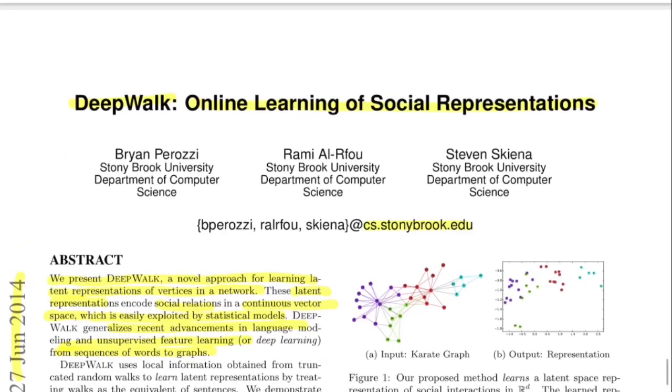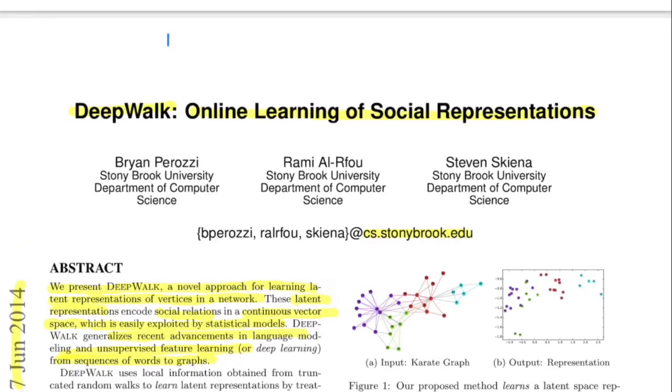So what they are saying is that we propose a system DeepWalk, let's call it DW for now, that takes in a network N that has I nodes and J edges. Once this goes through the black box of DeepWalk, you get a dense representation in some D dimension for each of the node I.